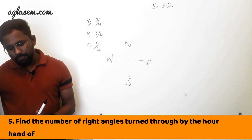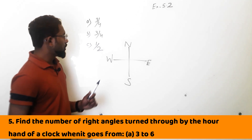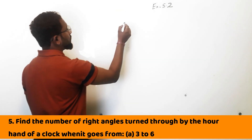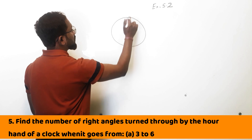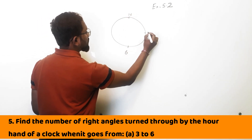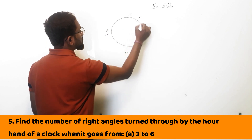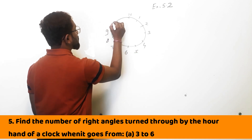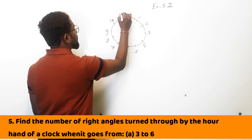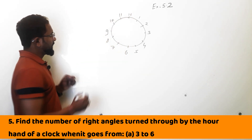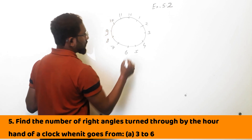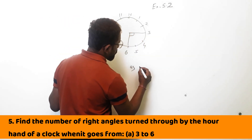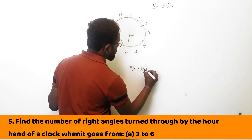Question 5: Find the number of right angles turned through by the hand of a clock when it goes from various positions. Let me draw the clock — 12, 6, 3, 9, and the other numbers. First part, 3 to 6: going from 3 to 6, you are making 90 degrees, so it is 1 right angle.